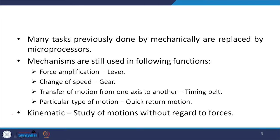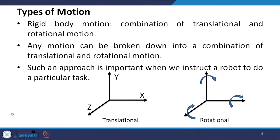In kinematics, we study motions without regard to forces — basically how motions are transformed from one form to another. Rigid body motions are combinations of translational and rotational motion. Any motion can be broken down into a combination of translational and rotational motion. This approach is important when we instruct a robot to do a particular task — based on the task, we plan this breakdown of motion.